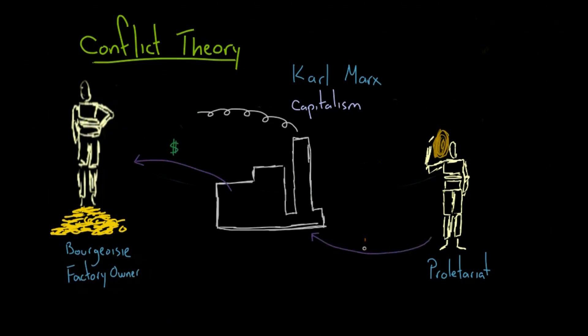The proletariat only had their labor to sell to make a living, and they were dependent on the factory owners to get paid. But this wasn't just a one-sided dependence. The factory owners were also dependent on the workers to work in the factories, though they would never admit it because they would lose some of their power.